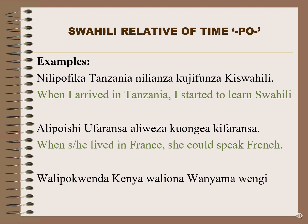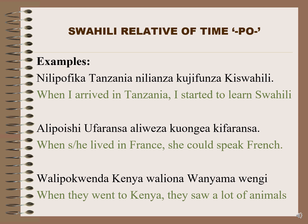'Walipokwenda Kenya waliona wanyama wengi' — When they went to Kenya, they saw a lot of animals. In all three examples we see the relative of time po: number one 'nilipofika', number two 'alipoishi', and number three 'walipokwenda', each translated as 'when' in English.